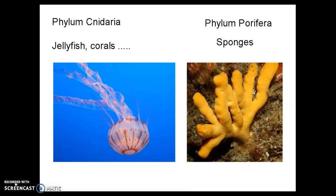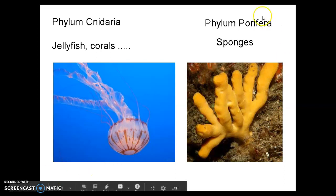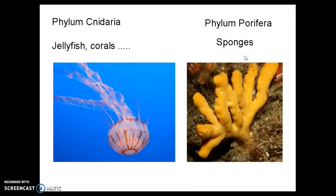Hello, everyone. Today we are getting started with the different animal phyla, starting with the simplest animals — poriferans, animals in the phylum Porifera, also known as sponges, and then cnidarians. These are things like jellyfish and corals that are in the phylum Cnidaria. The 'c' is silent, so that's cnidarian.